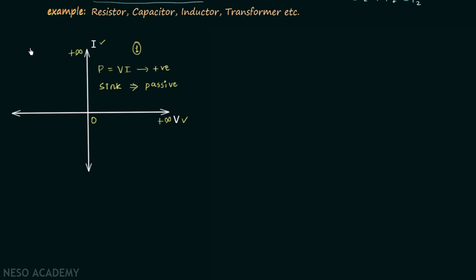In the second quadrant, current is positive but voltage is negative, so power is negative. When power is negative, the element acts as a source — it provides energy — which implies the element is an active element.